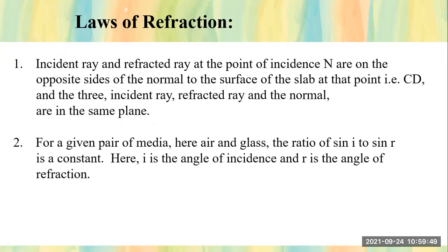For a given pair of media — for example air and glass — the ratio of sine i to sine r is constant. Here i is the angle of incidence and r is the angle of refraction. This is the second law of refraction. So the laws want to tell us: all three — incident ray, refracted ray, and normal — are in the same plane, and the ratio sine i to sine r is constant.